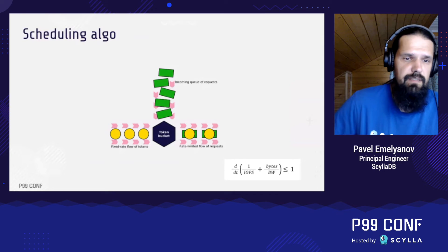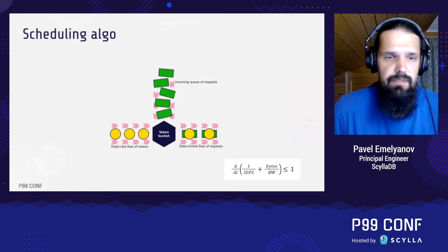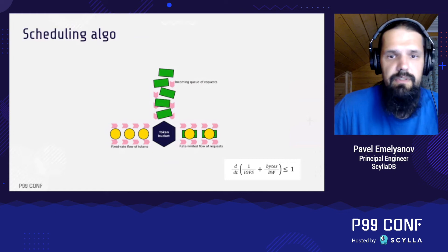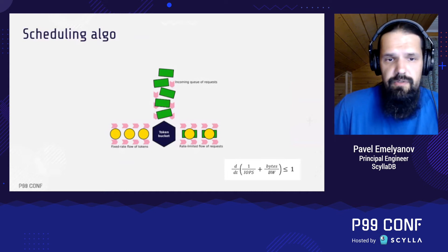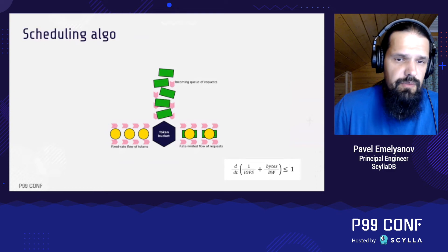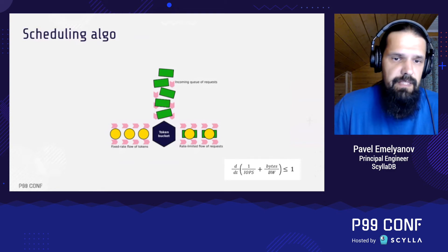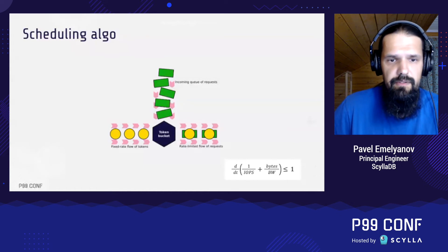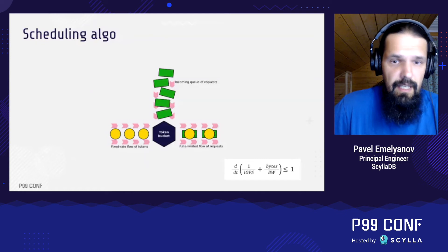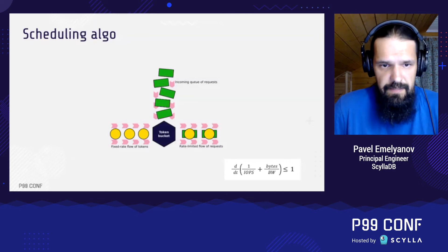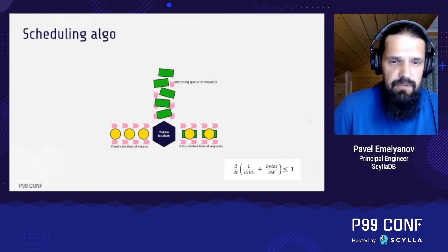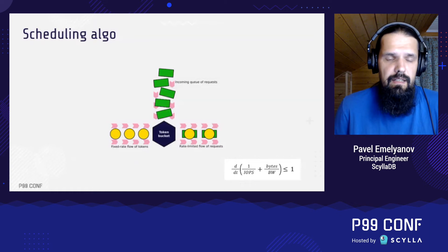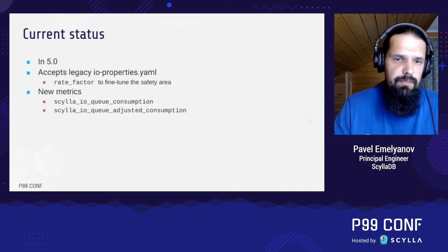Requests — the green bars — get into a bucket at random timestamps. Tokens — yellow circles — get into the bucket with a fixed rate of one, literally one, as on the right part of the equation. In order to get served into the disk, the request needs to grab some tokens from the bucket — specifically this tricky value in the brackets on the left side of the equation. This value is a fraction; it can be thought of as if requests were carrying pieces of tokens. In the end, the outgoing flow of requests will be rate-limited perfectly according to the equation. This is what we call rate-limited scheduling.